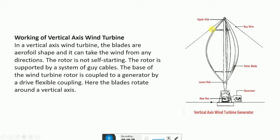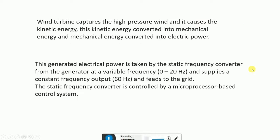The figure shows the gearbox, generator, lower hub, rotor blades, guy wire — the wire of very high strength — and upper hub. The wind turbine captures high-pressure wind which causes kinetic energy. This kinetic energy is converted into mechanical energy and then into electric power. The generated electric power is taken by a static frequency converter from the generator at a variable frequency of 0 to 20 Hz and supplies a constant frequency output of 60 Hz, feeding into the grid.